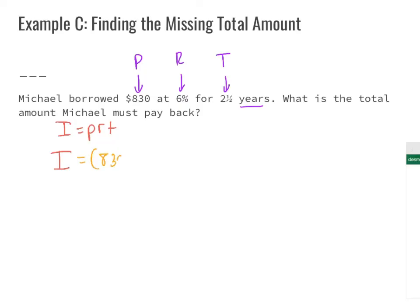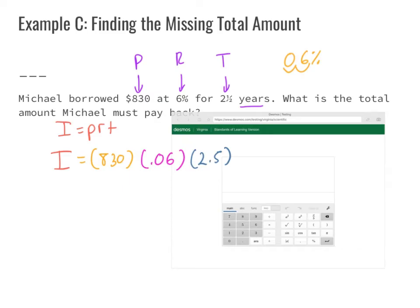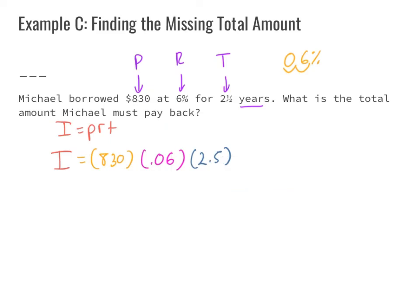We have P, R, and T, so we're solving for I. Our principal is $830. Six percent converted to a decimal — moving two places to the left — gives us 0.06. Two and a half years is written as 2.5. Using our calculator: (830)(0.06)(2.5) = $124.50. So our interest is $124.50. But that's not what the problem asked.